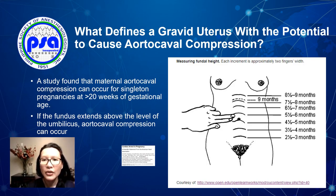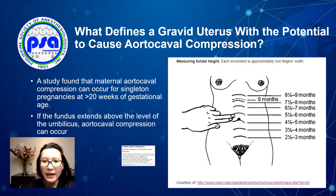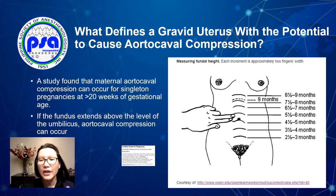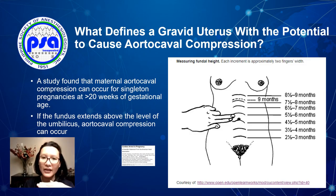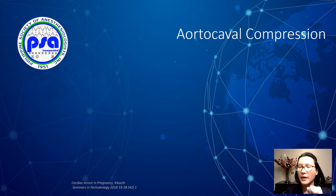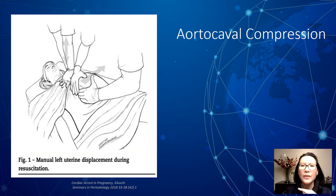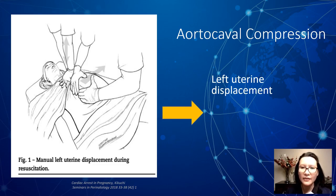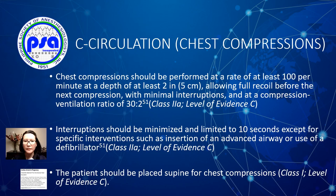Several factors determine the weight of the gravid uterus: the weight of the uterus, the number of fetuses, the weight of the fetus, and the weight of the fluid. A study found that maternal aortocaval compression can occur for singleton pregnancies starting at greater than 20 weeks age of gestation. The uterus reaches the level of the umbilicus at 20 weeks and grows approximately 1 cm per week thereafter. One finger breadth is roughly 2 cm, so a uterus extending 4 finger breadths above the umbilicus represents about 28 weeks gestation. Once the uterus is palpated above the umbilicus, left uterine displacement should be done throughout maternal resuscitation.